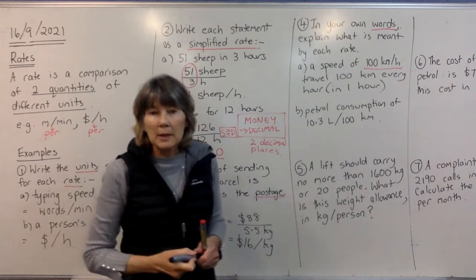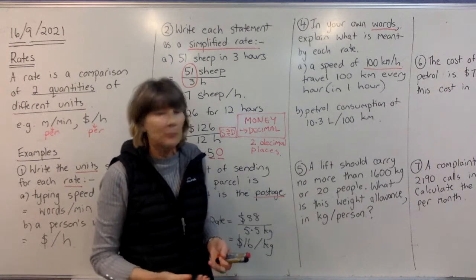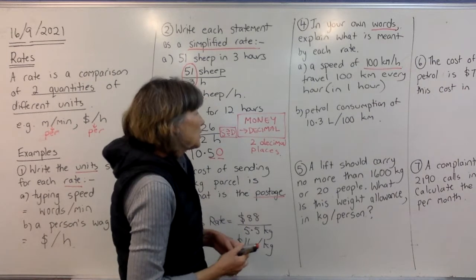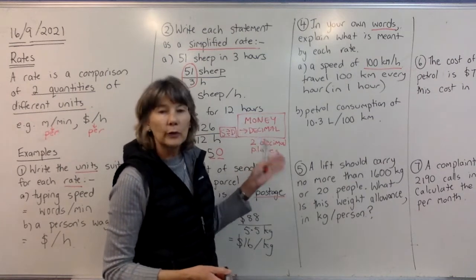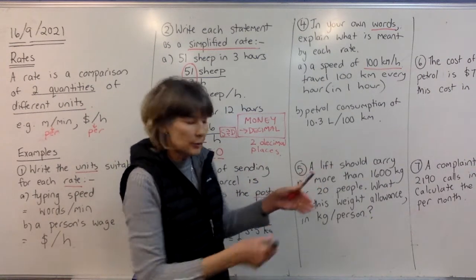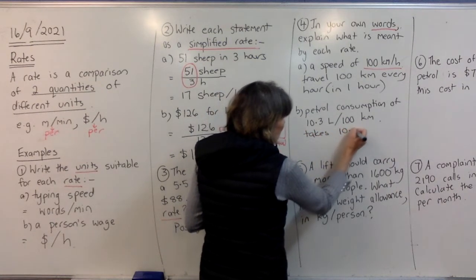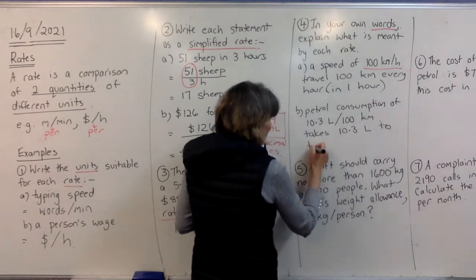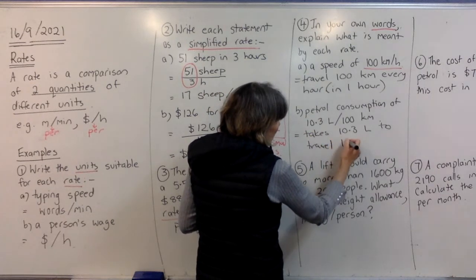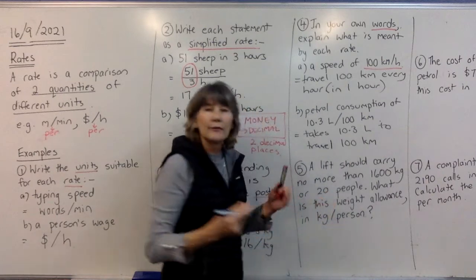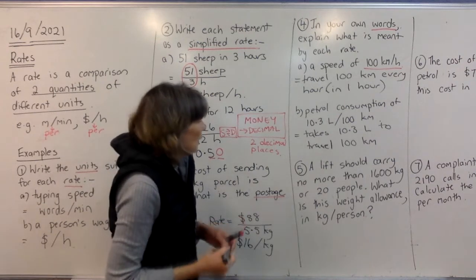Okay, let's look at the next one, petrol consumption. Now, this becomes important when you go to buy a car. You want the car to have good petrol consumption, because you're constantly filling it up with petrol, and that costs you money. Okay, so what this means is that this tank of petrol is going to take 10.3 litres for you to travel 100 kilometres. All right, so it takes 10.3 litres to travel 100 kilometres. Or for every 100 kilometres, you would have to put 10.3 litres of petrol in the tank.